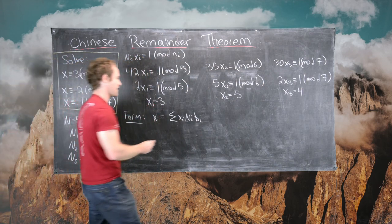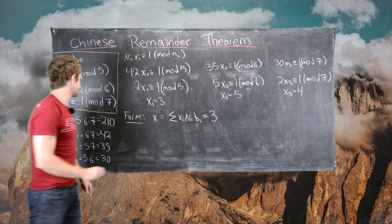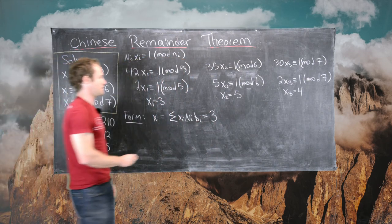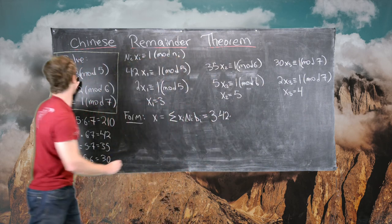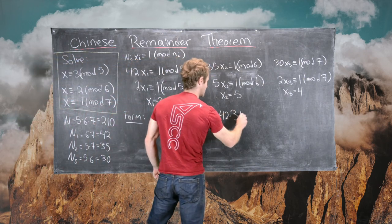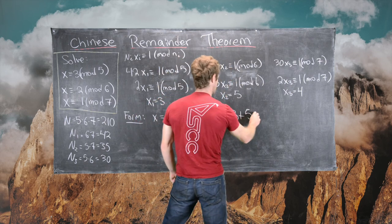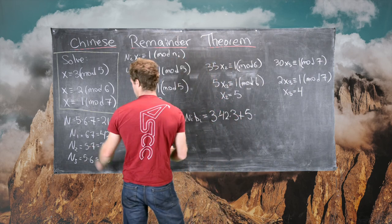So let's see what we get there. So we'll start with 3, so that's X1 times N1, which is 42, times B1, which is 3, plus X2, which is 5, times N2, which is 35.